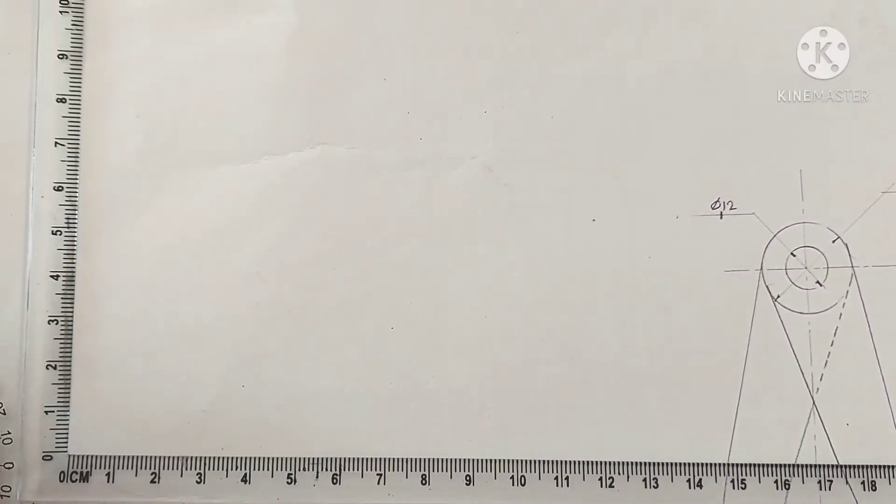In this video, we will see how to draw an ellipse. As you know that there is a problem, the length of major and minor axis are 120 mm and 70 mm respectively, draw an ellipse by concentric circle method.